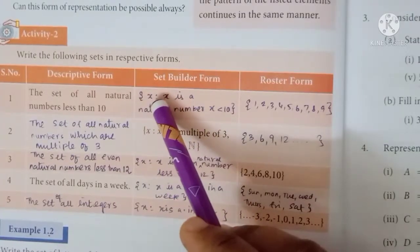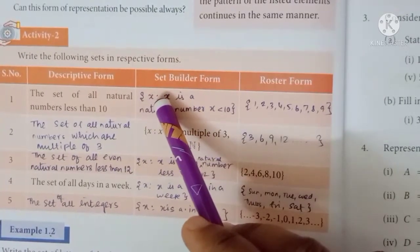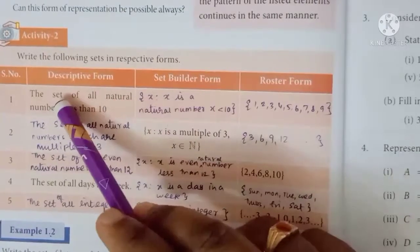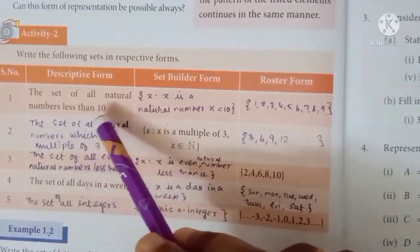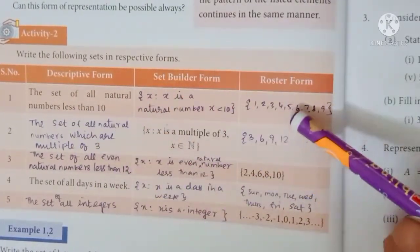This is the set symbol, then x should be mentioned. x is a natural number that is less than 10. Next is the roster form.